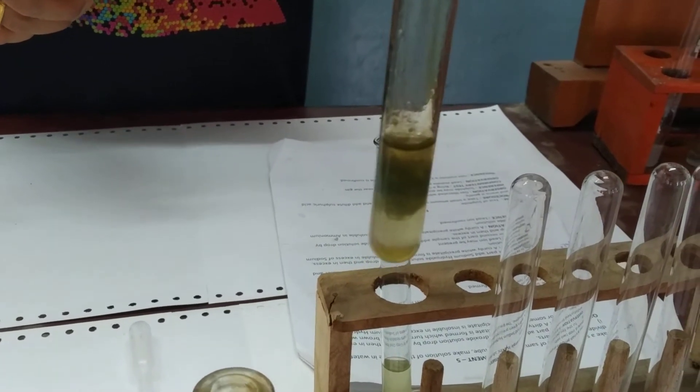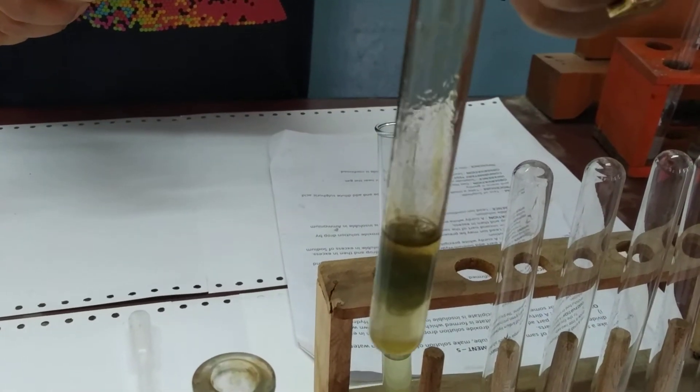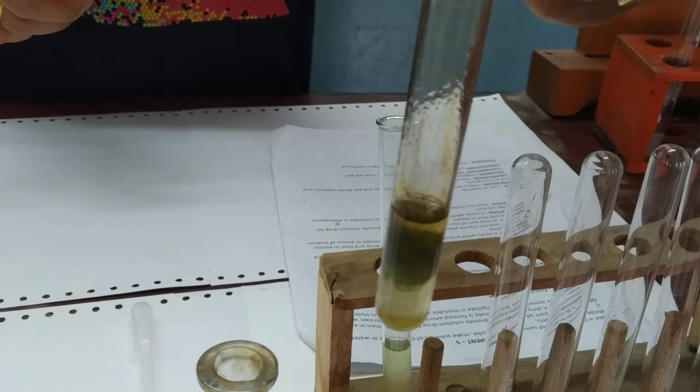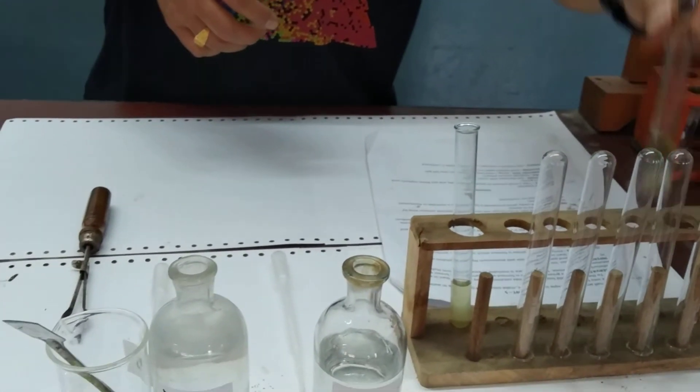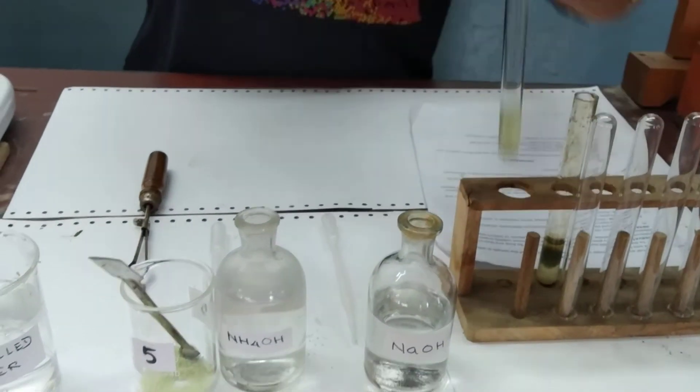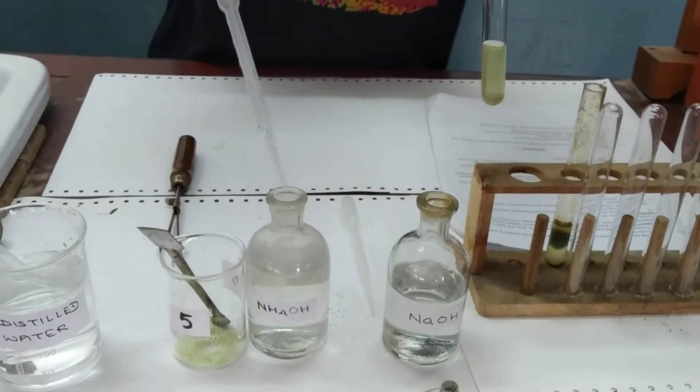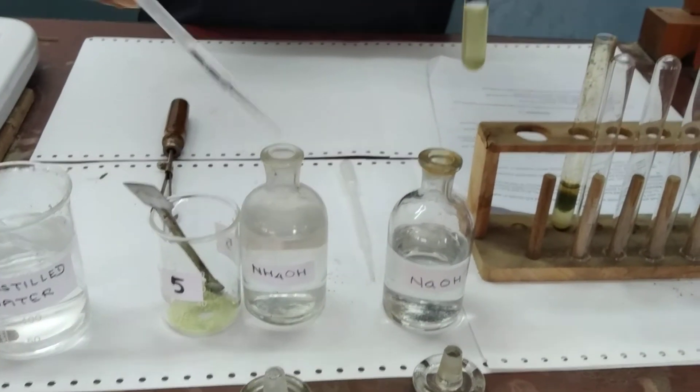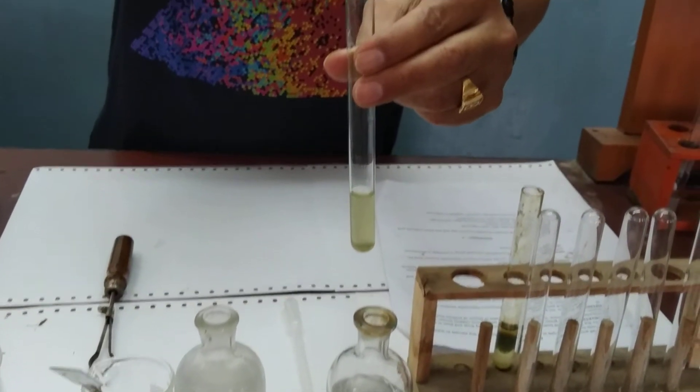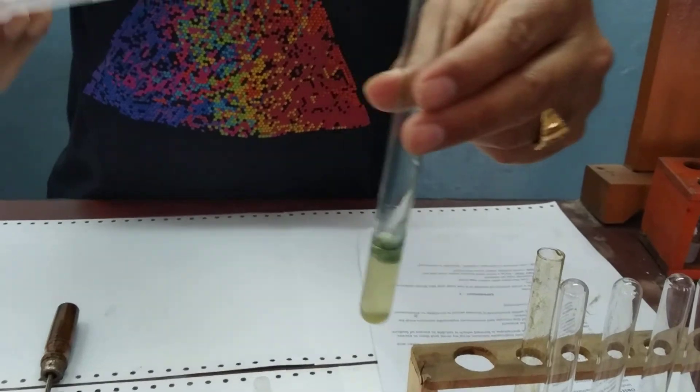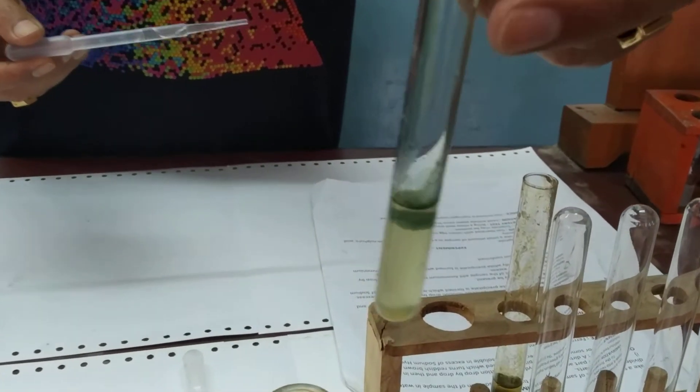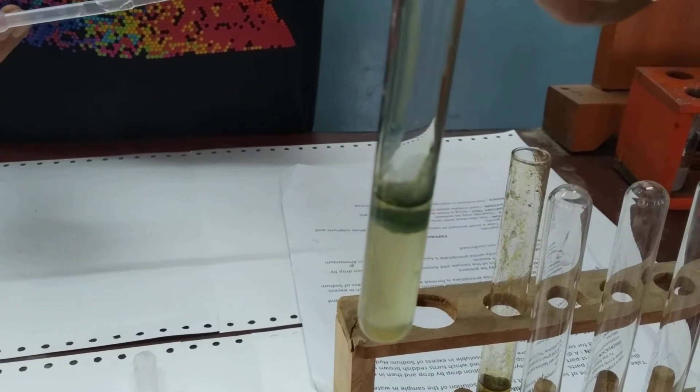So we can say that ferrous ions are present in the sample. Now to the next part of the sample, we add a few drops of ammonium hydroxide. Again, you can see a dirty green precipitate is formed.